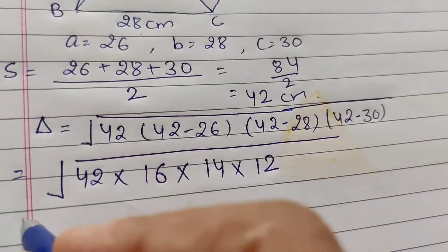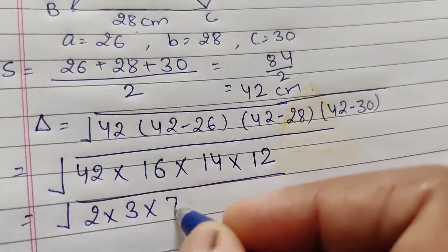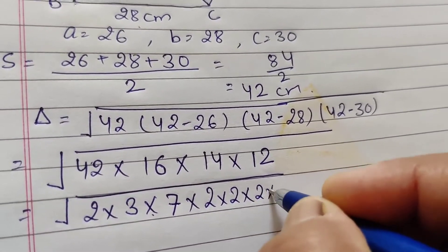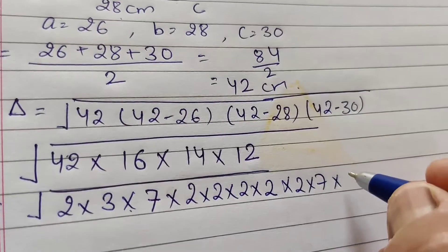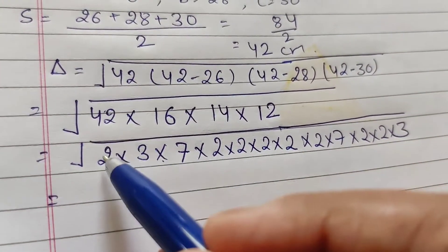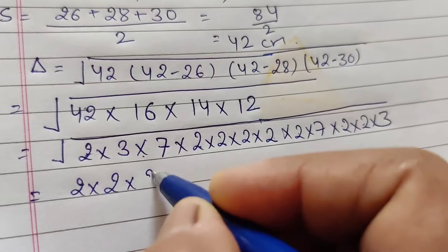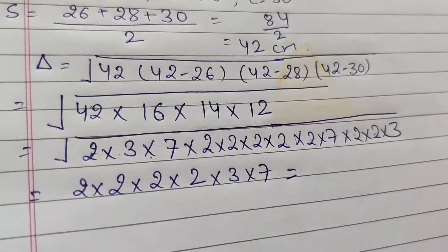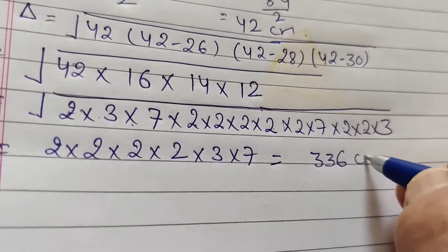After prime factorization of 42 (2×3×7), 16 (2⁴), 14 (2×7), and 12 (2²×3), and pairing all factors, we get 336 centimeter square as the area of triangle ABC.